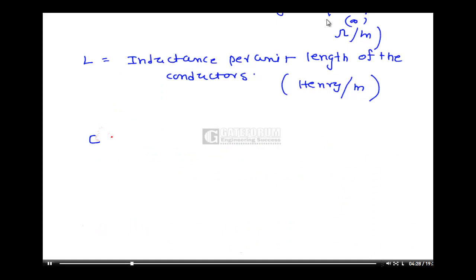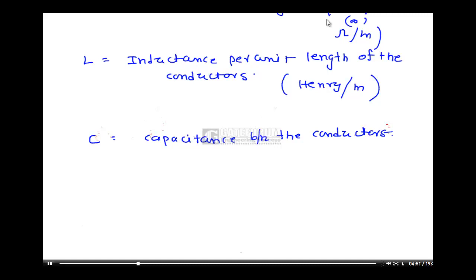Therefore, there must be some capacitance between the two parallel wires, because they are separated by a distance. So capacitance C — we can define this C as the capacitance between the conductors. Since the two conductors are separated by some distance, we can expect there is some capacitance between the wires. The unit for this is Farad per meter.